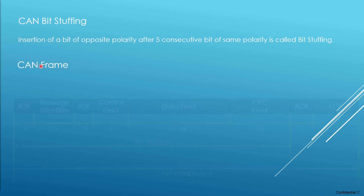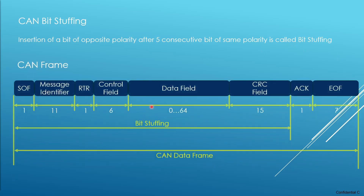Let us consider a CAN frame. A standard CAN frame contains the fields starting from the Start of Frame, followed by the message identifier, then the Remote Transmission Request, control fields, data fields, CRC field, acknowledgement, and End of Frame. Remember, bit stuffing is applicable from the Start of Frame until the CRC field, and it does not apply to the CRC delimiter, acknowledgement, or End of Frame since those have a fixed size.